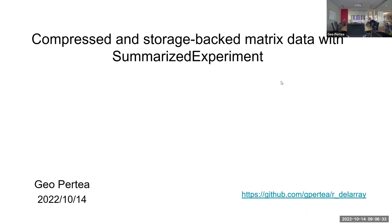I've been looking for a while at optimizing our large summarized experiment datasets for bulk RNA-seq, especially for some of the very large feature data that we have. The junctions are a problem sometimes to handle, and so this is about some methods that I realized in the last year or so that we actually weren't using, and it might make our life easier dealing with large RSEs.